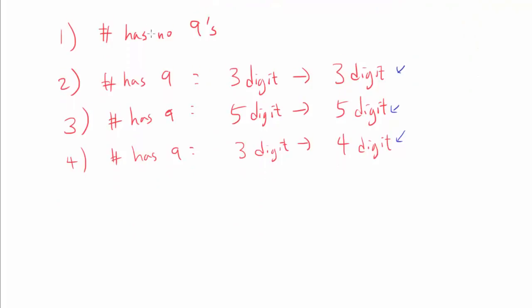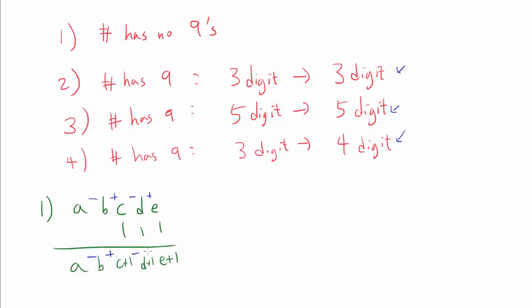Let's begin with the first case: when the number has no 9s. If we have digits A, B, C, D, E and add 111, all of the digits A through E cancel out when we subtract. The only parts that matter are 1 minus 1 plus 1 from the 111 itself. If the number has an even number of digits, we get minus 1 plus 1 minus 1. So in this case, we can only get plus or minus 1.